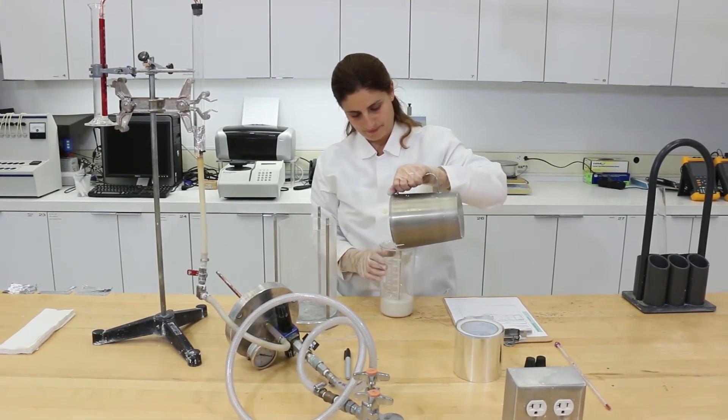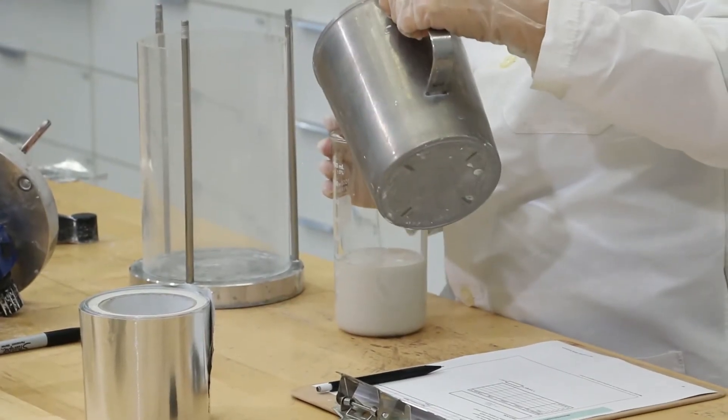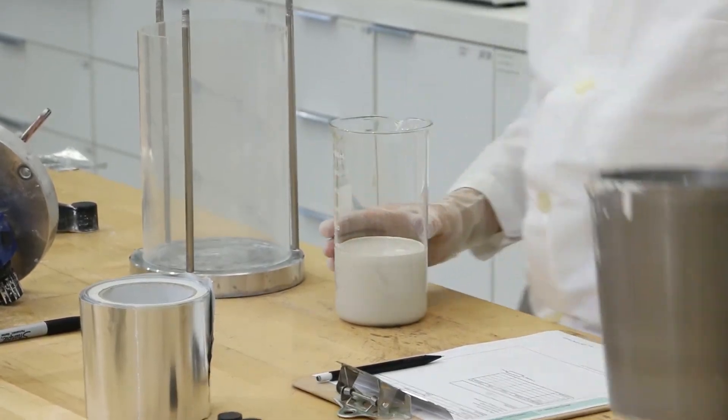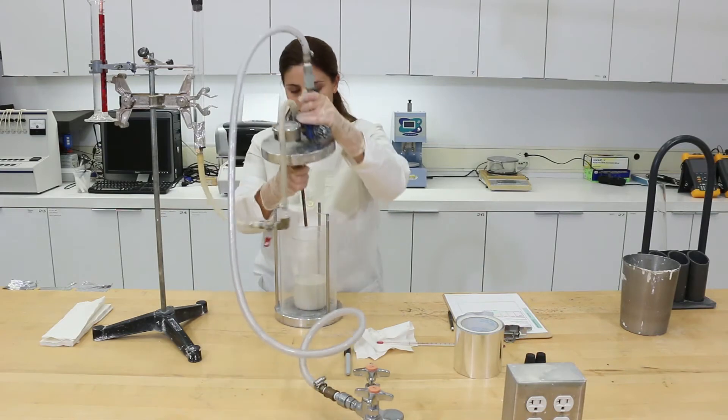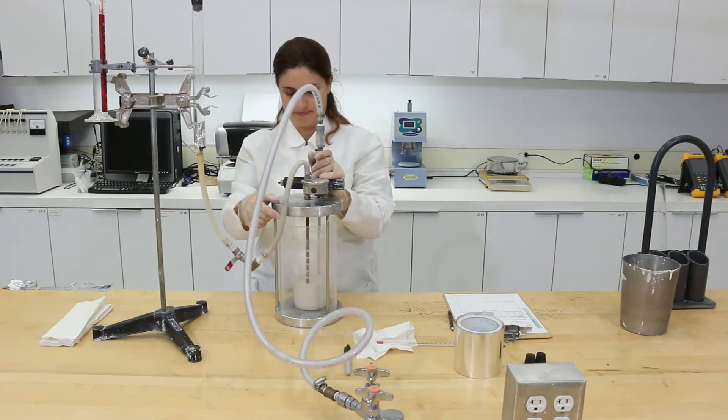Pour 500 grams of grout into the test container. Now, place the container in the pressure vessel and close the lid of the vessel.